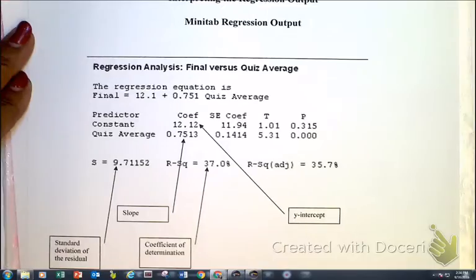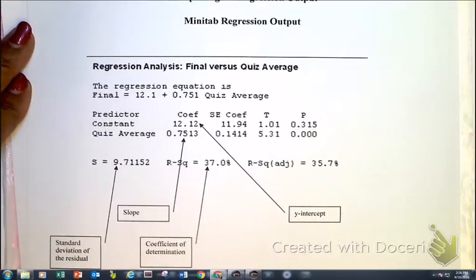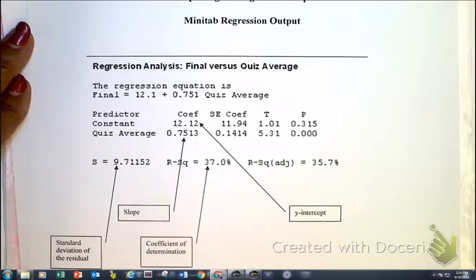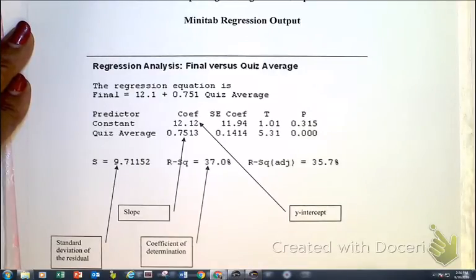As we're talking about searching, we're talking about giving a regression analysis or regression output and being able to search and find our slope, our y-intercept, our correlation coefficient, our coefficient of determination, our standard deviation of the residual.